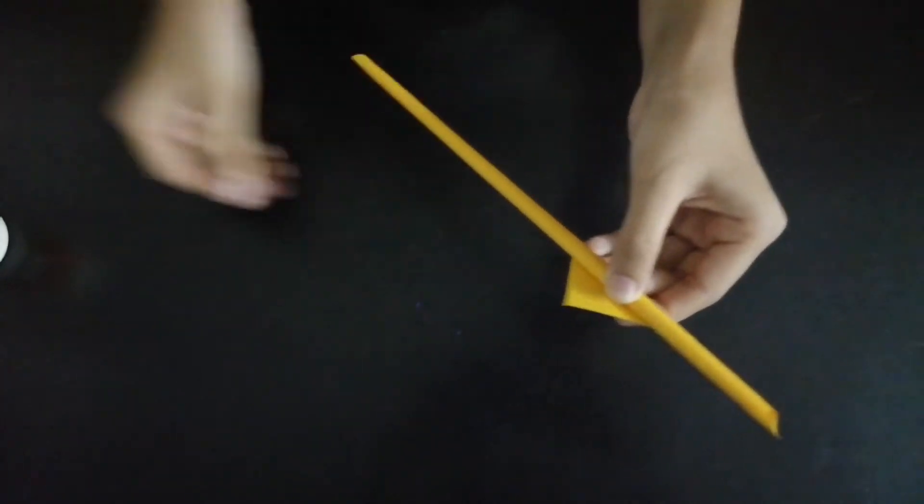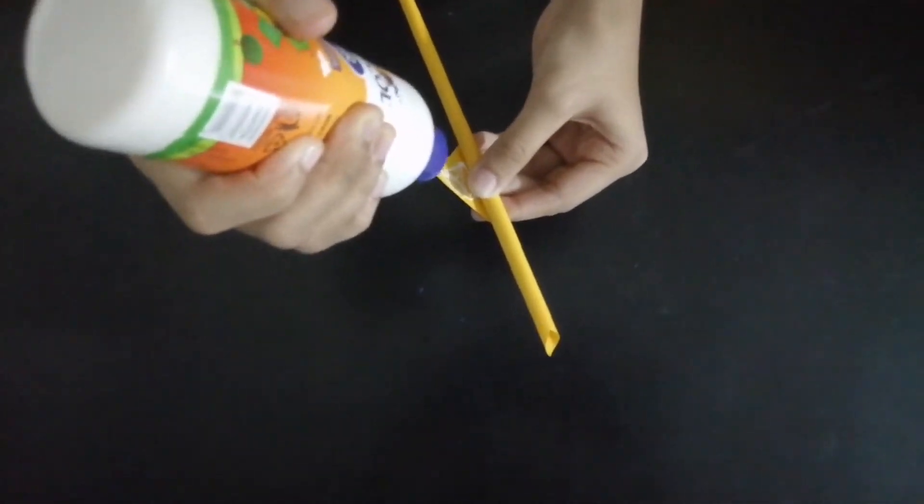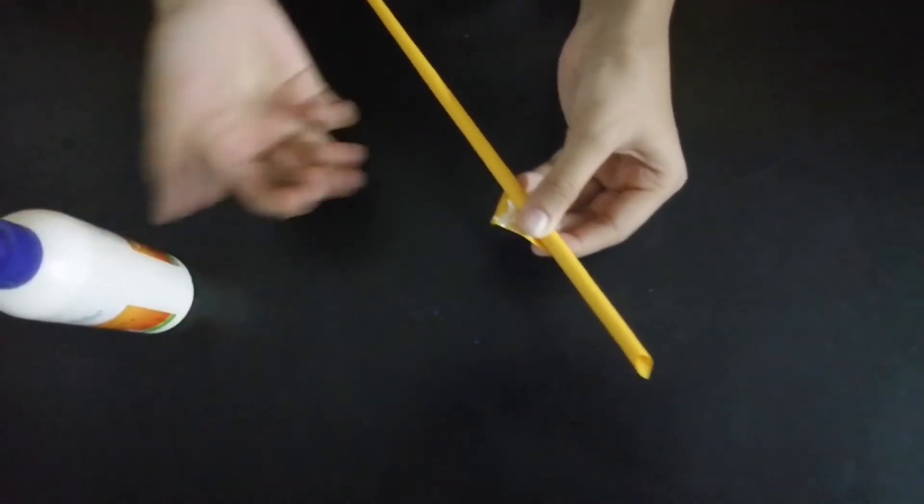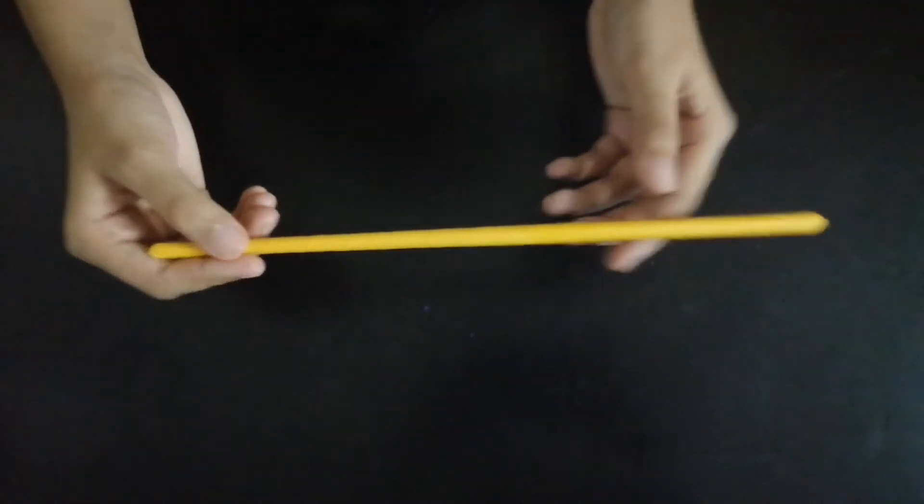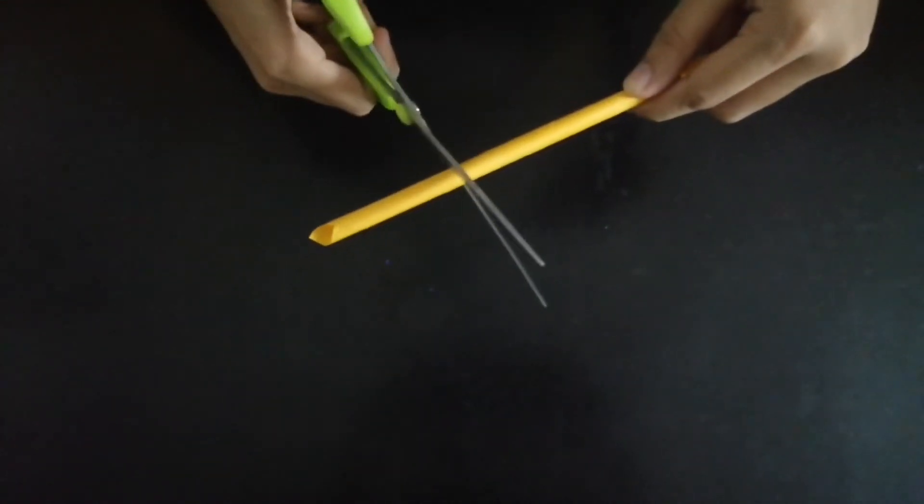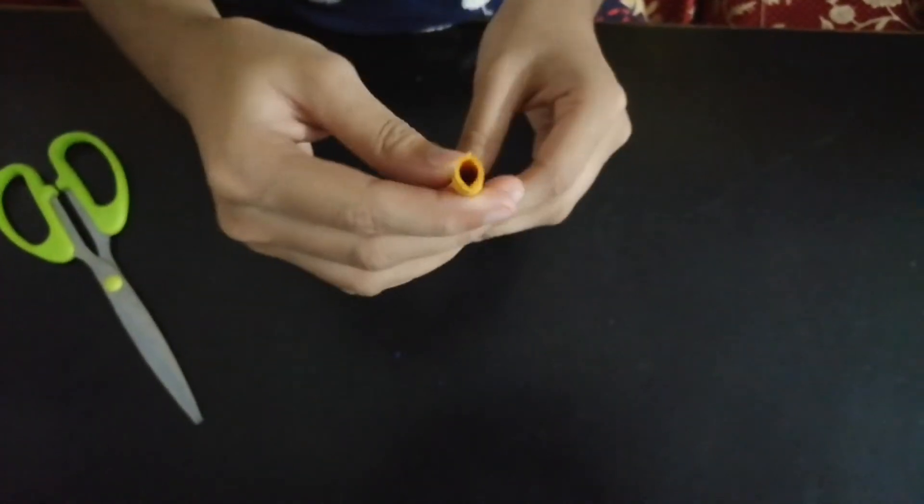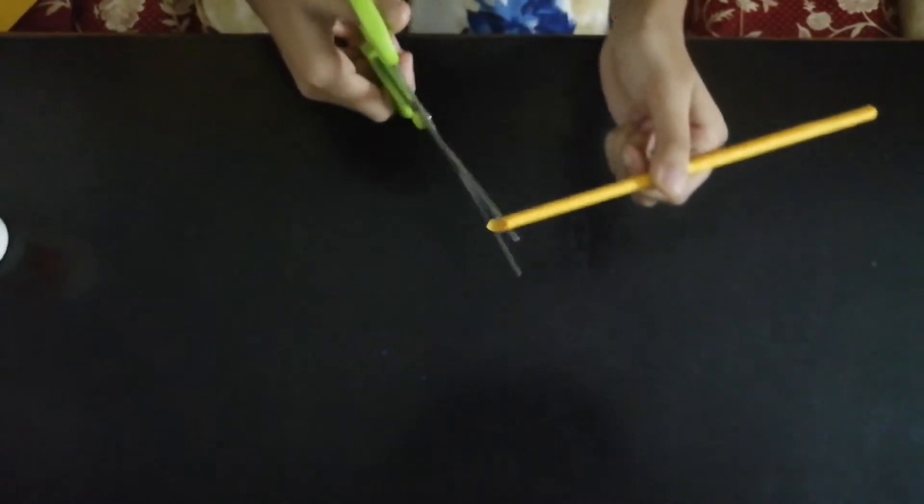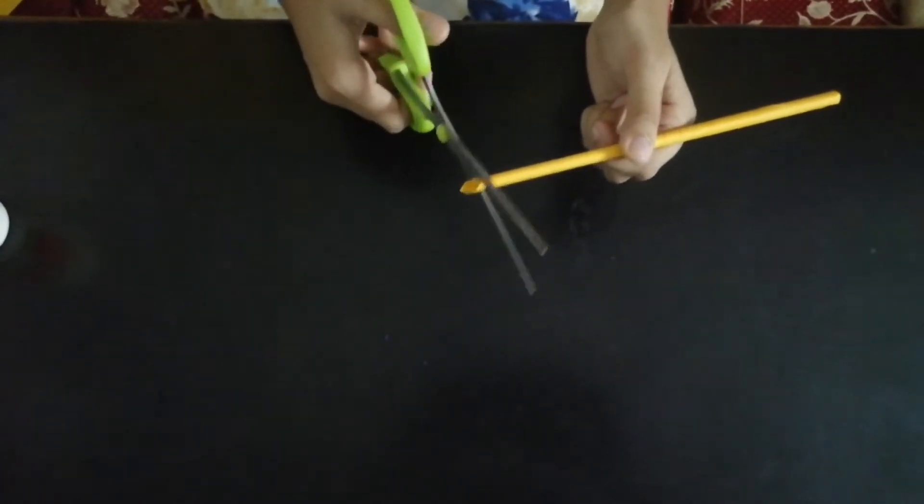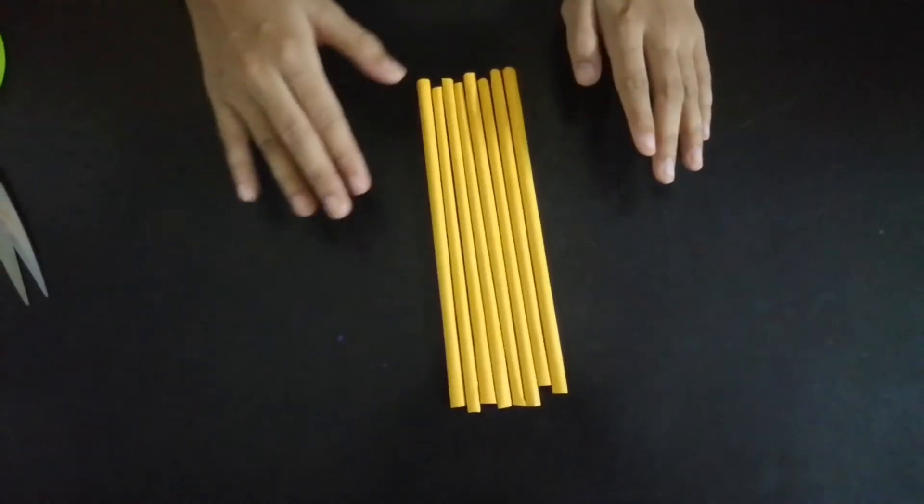After rolling, we get this shape. Now we have to cut three-fourths of it and remove the excess. We've now made these paper rolls.